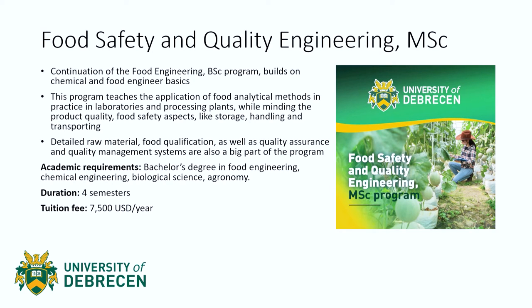Now let's take a look at the master's programs. First is food safety and quality engineering — the continuation of the food engineering bachelor's program, built on chemical and food engineering basics. This program teaches the application of food analytical methods in practice in laboratories and processing plants, while covering product quality and food safety aspects like storage, handling, and transporting. Detailed raw material and food qualification, as well as quality assurance and quality management systems, are also a big part of the program. The academic requirements are a bachelor's degree in food engineering, chemical engineering, biological science, or agronomy. The duration is four semesters, and the tuition fee is $7,500 US dollars per year.